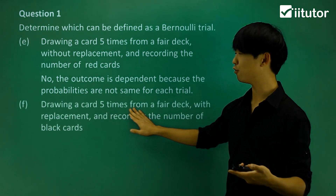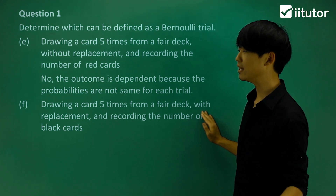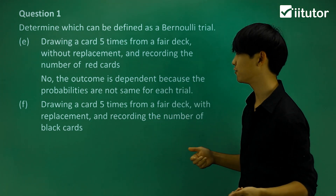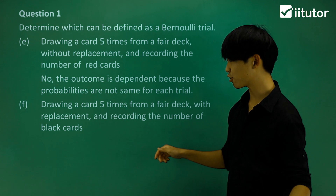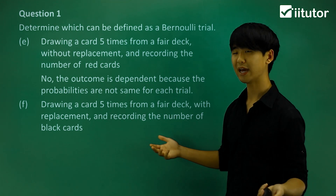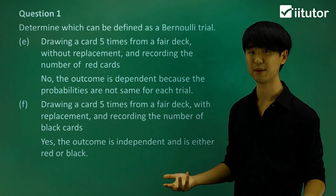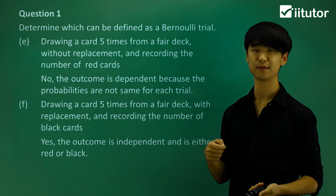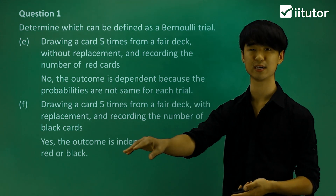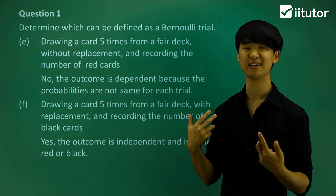In part F, we're drawing a card five times from a full deck again, but this time with replacement. So I draw a card, look at it, put it back, and draw again — five times — recording the number of black cards. Yes, it is a Bernoulli trial because the outcome is independent. Replacing the card means it's the same as the event before; the probabilities stay the same each time. That covers the events that classify things as a Bernoulli trial.